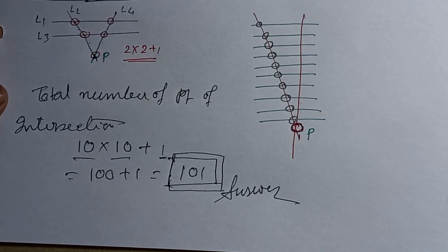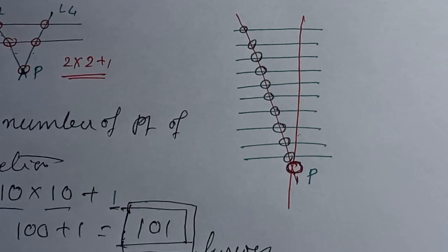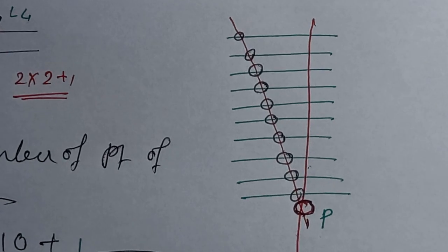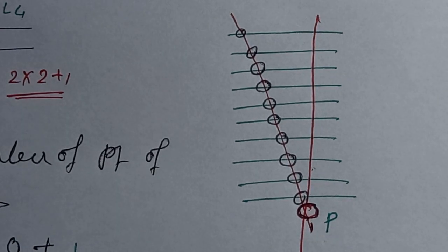Then the other contribution: the 10 even lines through point P give 1 intersection point among themselves. Among the parallel lines, intersections among themselves equal 0. So combining: 100 plus 1 gives 101, and subtracting the zero contributions from parallel-parallel pairs, the result is 101.